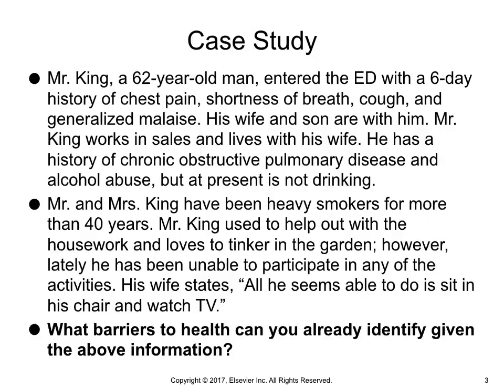Mr. King works in sales and lives with his wife. He has a history of chronic obstructive pulmonary disease and alcohol abuse, but at present is not drinking. Mr. and Mrs. King have both been heavy smokers for more than 40 years. Mr. King used to help out with the housework and loves to tinker in the garden. However, lately he has been unable to participate in any of these activities. His wife states all he seems able to do is sit in his chair and watch TV. What barriers to health can you already identify given the above information?